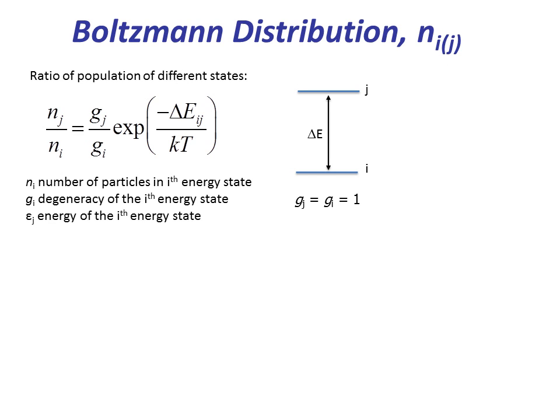So far in this course, we have looked into the transitions of electrons from one energy state to another in one given molecule. However, in a real experiment, there are a huge number of molecules, hence an enormous number of electrons. These electrons could be dispersed in different energy states. Boltzmann distribution allows us to calculate the number of electrons in different energy states.